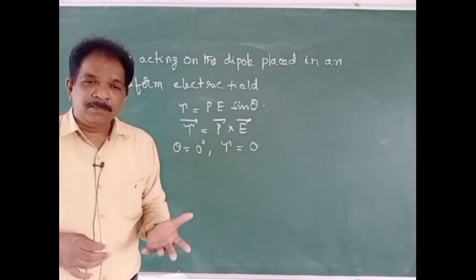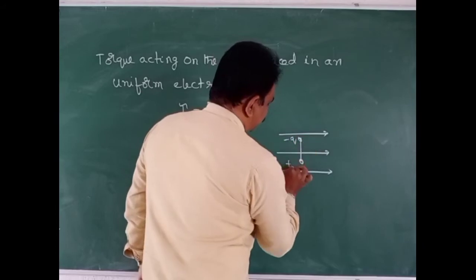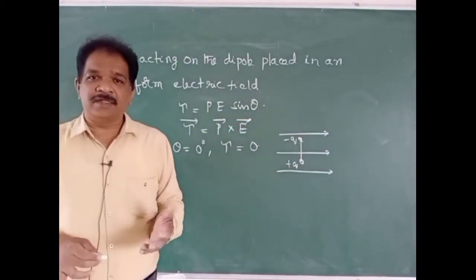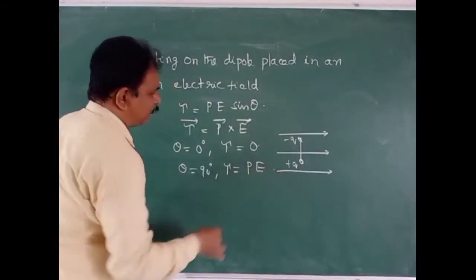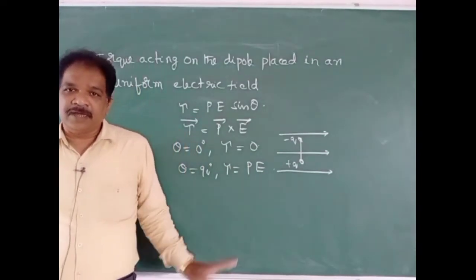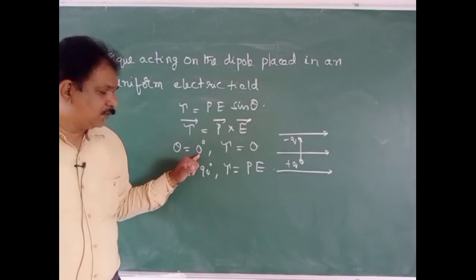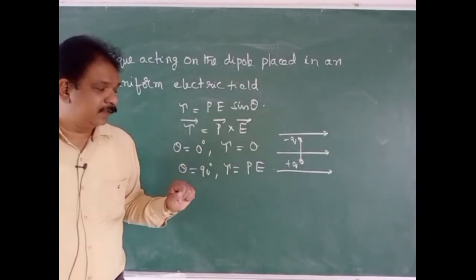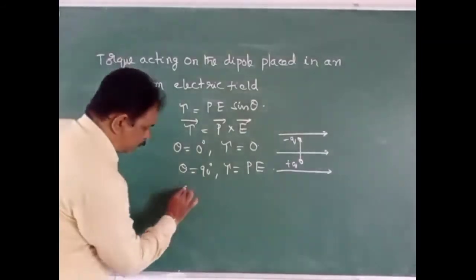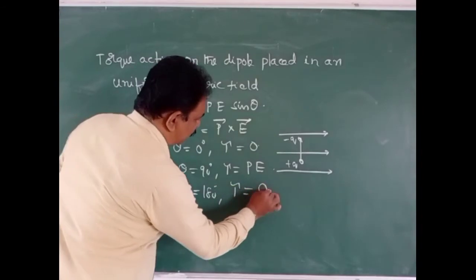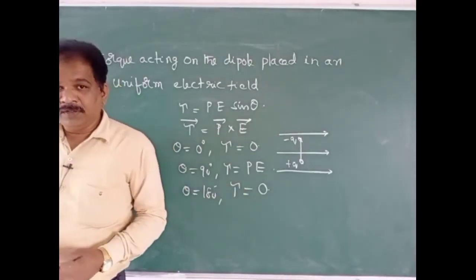If theta = 90 degrees, the dipole is placed perpendicular to the electric field, and maximum torque acts on the dipole. That maximum torque value is tau = pE. If the dipole is parallel or anti-parallel to the field (theta = 0° or theta = 180°), torque equals zero. For theta = 180°: tau = pE sin180° = pE × 0 = 0.